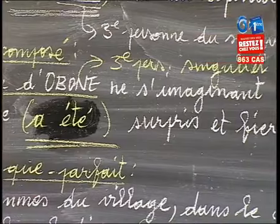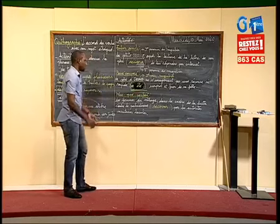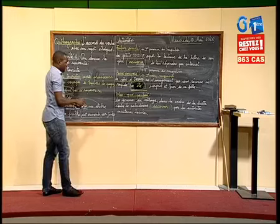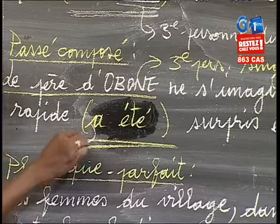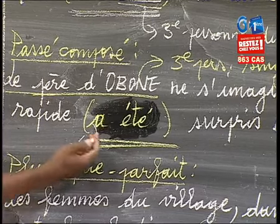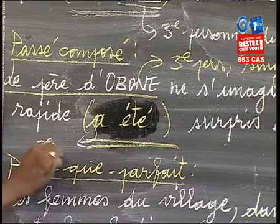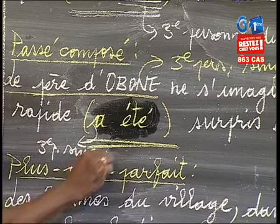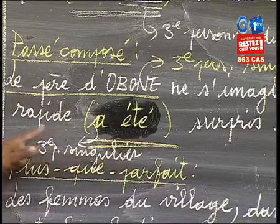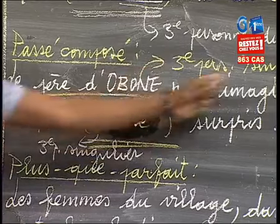Nous avons ici le verbe conjugué au passé composé : l'auxiliaire conjugué accompagné du participe passé du verbe « être ». L'auxiliaire « avoir » au présent donne : j'ai, tu as, il a. Donc, pour la troisième personne du singulier, on dit « il a ». L'auxiliaire avoir est conjugué à la troisième personne du singulier. On remarque que le verbe conjugué au passé composé et le sujet éloigné, le père d'Abono, partagent la même personne et le même nombre. On conclut que le verbe est en accord en personne et en nombre avec son sujet.